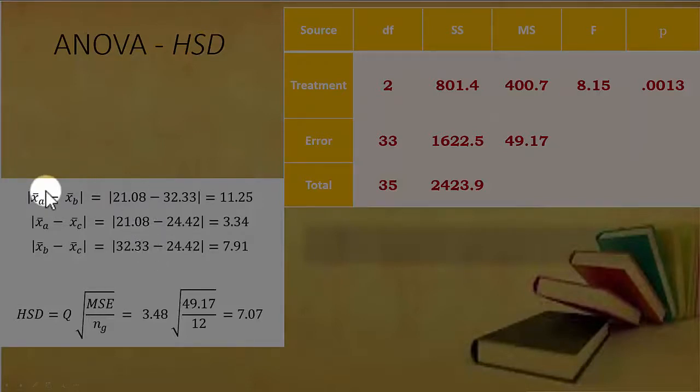We get the absolute value of the difference between each pair of means. So A and B differ by 11.25, A and C differ by 3.34, and B and C differ by 7.91.